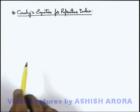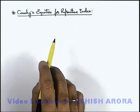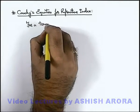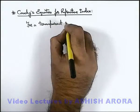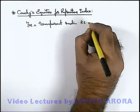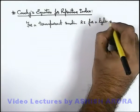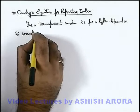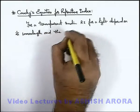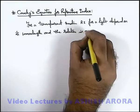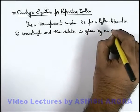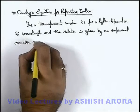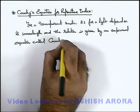Let us now study an important term in determining the refractive index of a transparent medium — that is Cauchy's equation. For a transparent medium, the refractive index for light depends on its wavelength, and the relation is given by an empirical equation called Cauchy's equation.